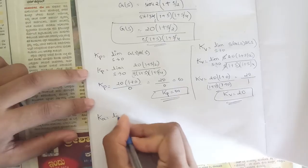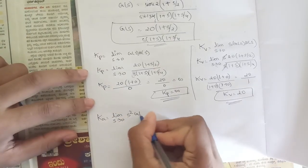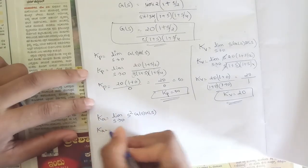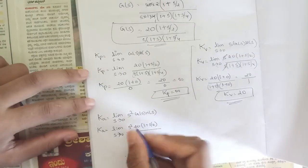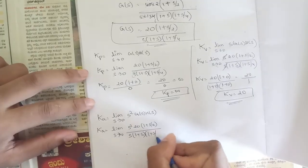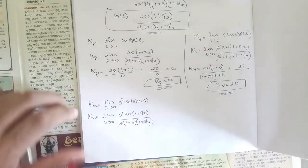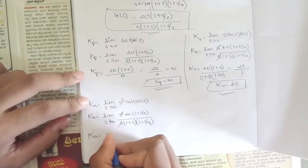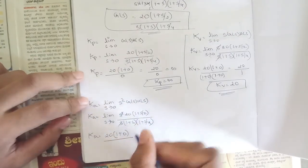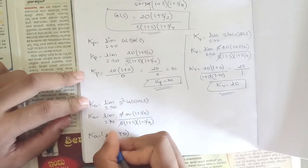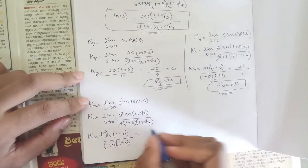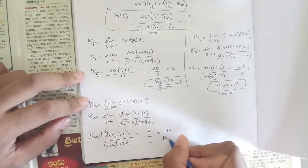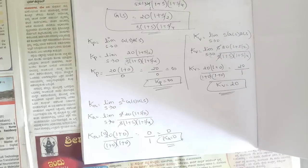For Ka, the formula is limit as s→0 of s²·G(s)·H(s). Substituting s² into the expression, one s cancels with the denominator's s, leaving one s in the numerator. As s→0, this s goes to 0, giving 0 divided by 1, so Ka equals 0.